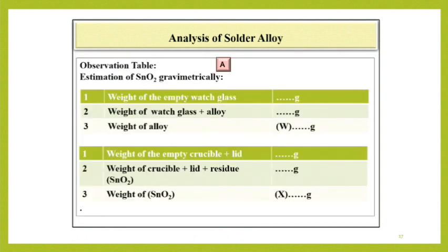Observation table for part A. Weight of the empty watch glass, weight of the watch glass plus alloy and finally weight of alloy as W gram. Then, weight of the empty crucible plus lid as W1 gram, weight of the crucible plus lid plus residue as W2 gram, weight of SnO2 as X gram.